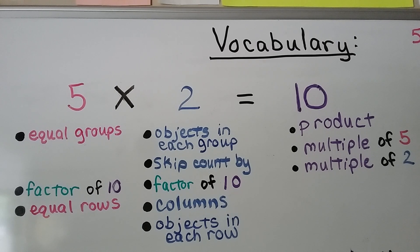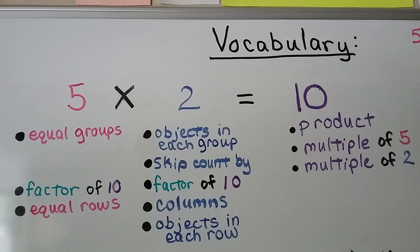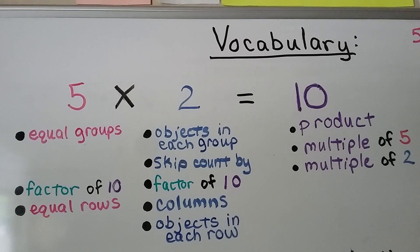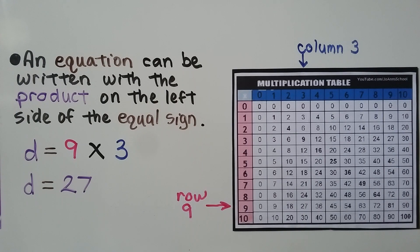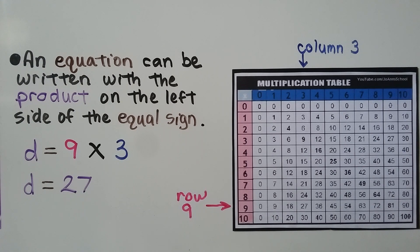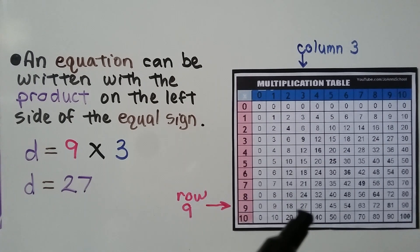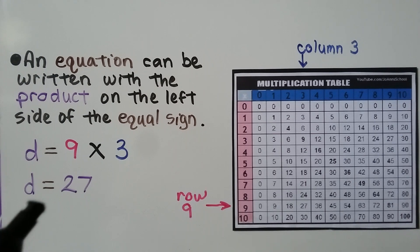From chapter 4, we learned that 10 is also a multiple of 5 and a multiple of 2. An equation can be written with the product on the left side of the equal sign. For example, d is equal to 9 times 3. We look at the row for 9 and the column for 3, and they meet at 27. So d is equal to 27 — that's our product.